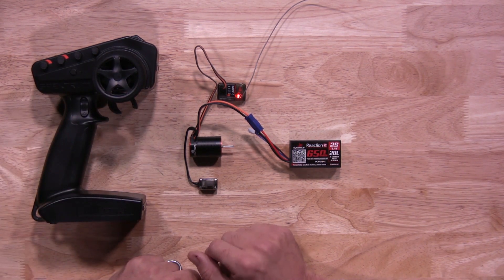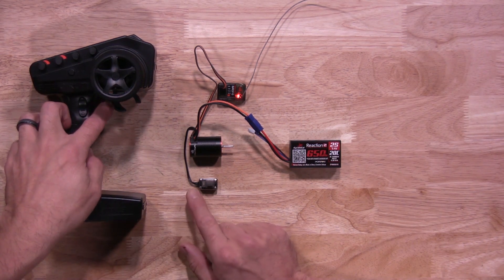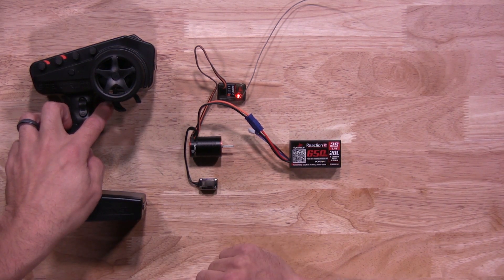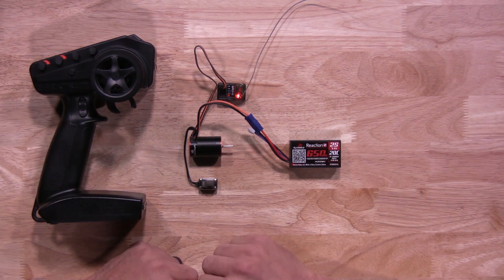Next setting is brake slash reverse. So you'll hold full brake on the transmitter. Hit your button one last time. You'll hear three beeps and you'll know it's been saved. You let go. You'll synchronize.